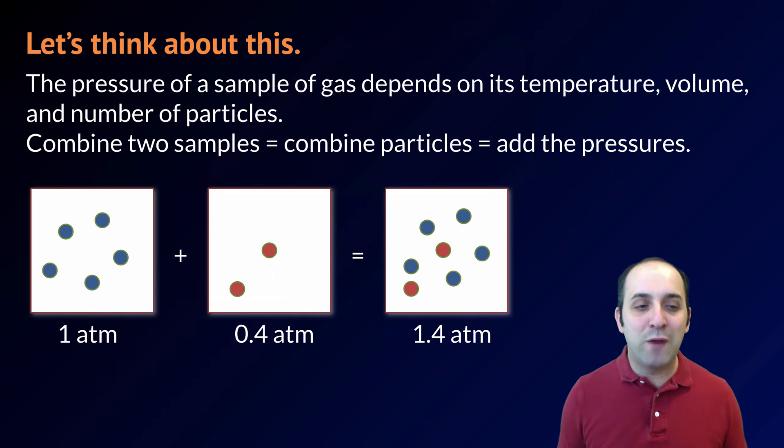So what happens if we have two different samples of two different gases, each exerting their own pressures, and we combine them together keeping the temperature constant? What's going to happen is that those two pressures are going to combine because we've now combined the number of particles in each of those samples. That's what Dalton's law of partial pressures really tells us.